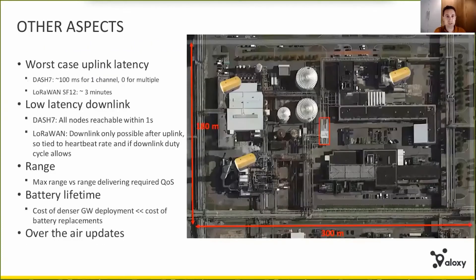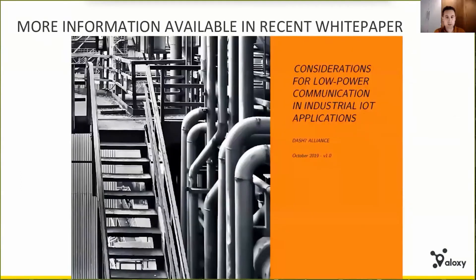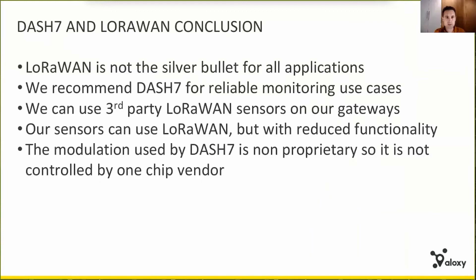The Dash 7 maximum range is lower than LoRaWAN's maximum range, but it's enough for a use case like this where you have a gateway in the middle and different sensors in the field. Also, the cost of a denser gateway deployment is much lower than the cost of more frequent battery replacements. The increased data rates also make over-the-air updates actually feasible. More background is available in the white paper linked on the last slide. The conclusion is that there is no silver bullet, and LoRaWAN is not a silver bullet for all applications. What we recommend to customers is to use Dash 7 for reliable monitoring, while also supporting third-party LoRaWAN sensors on our gateway — using multi-protocol, multi-modality to solve different use cases.